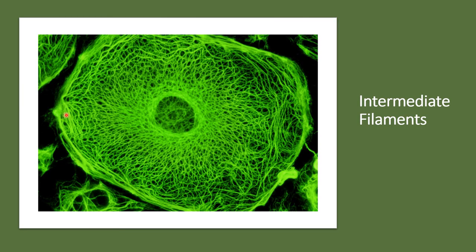This here is an image of a cell showing its intermediate filaments using fluorescence microscopy. The intermediate filaments help connect the nuclear membrane with the cell membrane. You can see these filaments connecting the nuclear membrane with the cell membrane. There are different types of intermediate filaments specific to different types of cells.